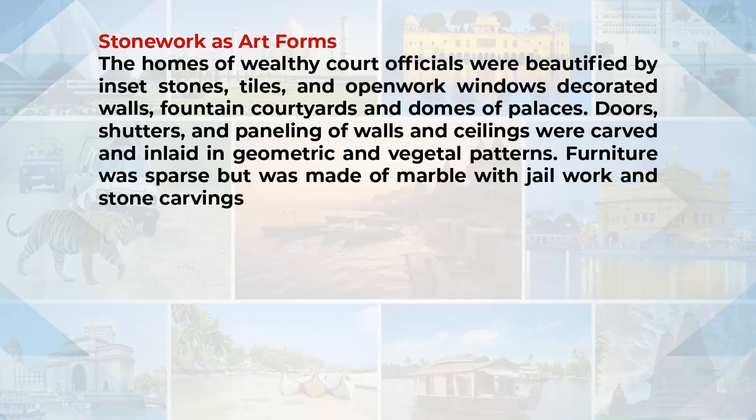Other popular handicrafts include stone work all over India. The homes of wealthy court officials were beautified by inset stones; tiles and window work were decorated. The walls, fountain courtyards and domes of palaces were decorated. The doors, shutters and panelling of walls and ceilings were carved and inlaid in geometric and vegetative designs. Furniture was sparse but mainly made of marble with jali work and stone carvings.